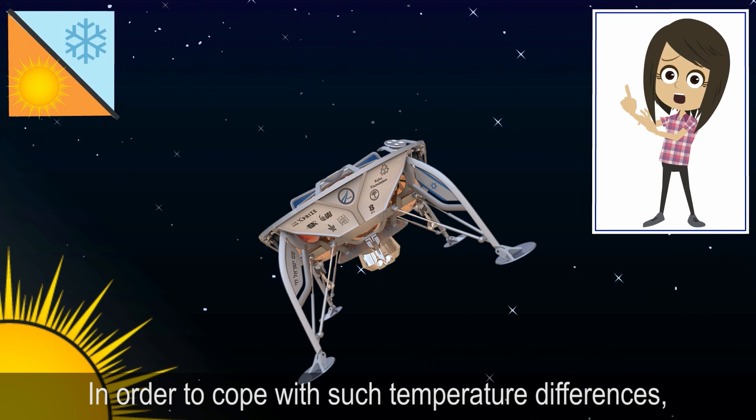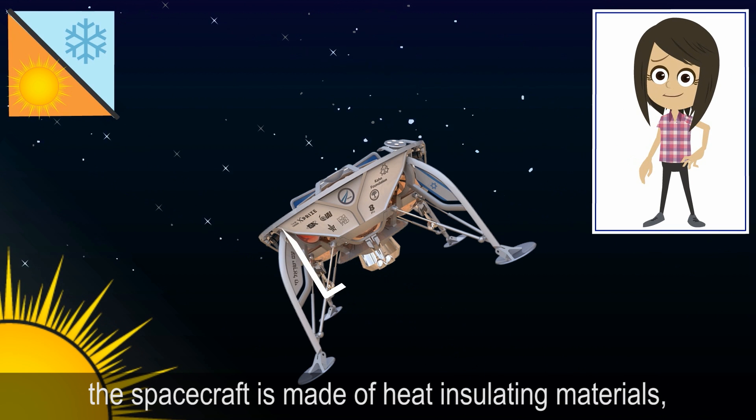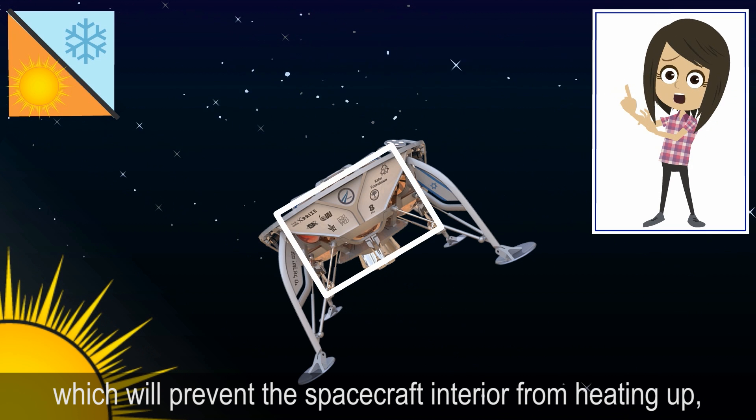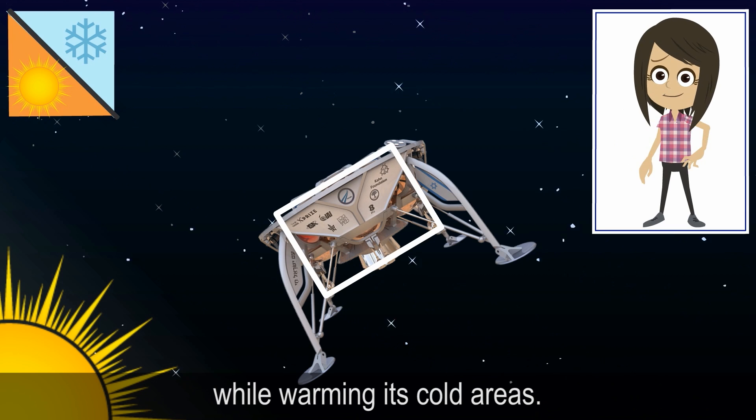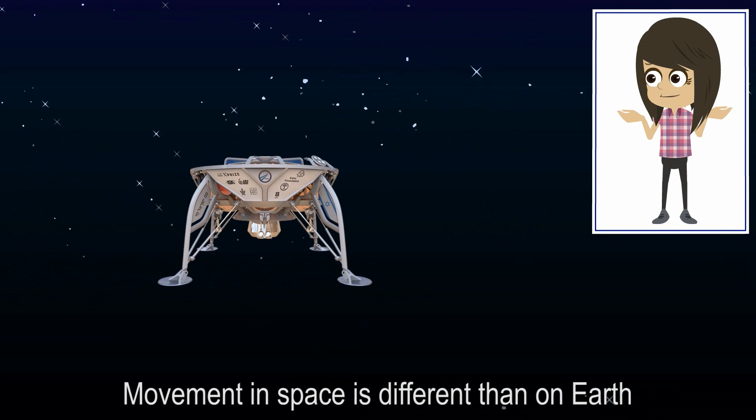In order to cope with such temperature differences, the spacecraft is made of heat-insulating materials, which will prevent the spacecraft interior from heating up while warming its cold areas.